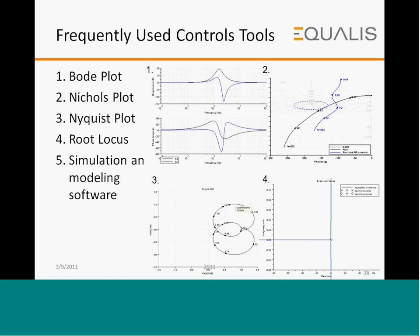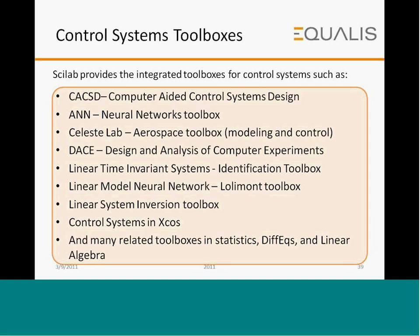To model control systems, you need to plot control system domain-specific graphs such as Bode plots, Nichols plots, Nyquist plots, or root locus — the simulation tool should have the capability to model these. These tools are built into Scilab. The toolboxes available in Scilab for control system design are listed in this slide.